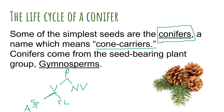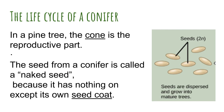One type would be the angiosperms, and then the other type is the gymnosperm. The angiosperms are those that reproduce using flowers. The gymnosperms are still vascular plants that reproduce using seeds. However, instead of having the seed enclosed inside the flower that would eventually turn into a fruit inside the ovary, the gymnosperms don't have that covering. The seed from a conifer is called a naked seed, which is actually what the term gymnosperm means. Angiosperm means covered seed; gymnosperm means naked seed, because it has nothing on it except its own seed coat.